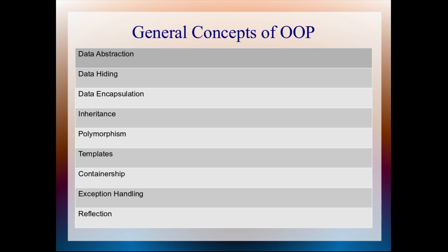Many books only include general concepts as Data Abstraction, Data Hiding, Data Encapsulation, Inheritance and Polymorphism. And they do not include Templates, Containership, Exception Handling, Reflection in their first chapter. But believe me, all these concepts only belong to Object Oriented Programming.